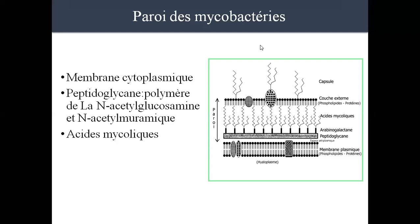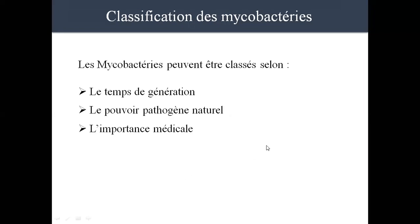Pour reprendre, nous avons défini ces bactéries qui sont définies par leur caractère acido-alcool résistant, et ce caractère majeur est lié à la structure de la paroi. La paroi est un constituant obligatoire et indispensable pour les bactéries. Dans cette structure de la paroi qui caractérise cette bactérie par rapport aux autres, c'est la présence de ce qu'on appelle les acides mycoliques, de nature lipidique, qui confèrent à cette bactérie ce caractère d'acido-alcool résistant.